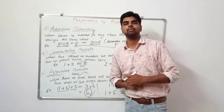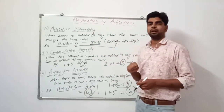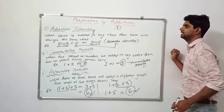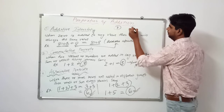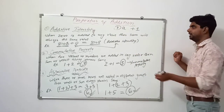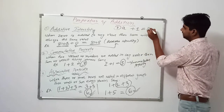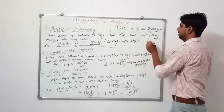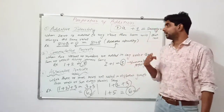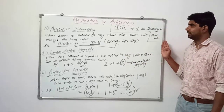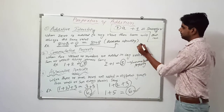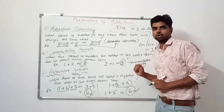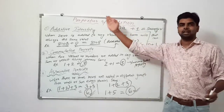So those are three properties of addition. There is one more — a fourth property. It says: if we add 1 to any number, we get the successor of that number. For example, if we add 1 to 10, we get 11, and 11 is known as the successor of 10. So these are the properties of addition.